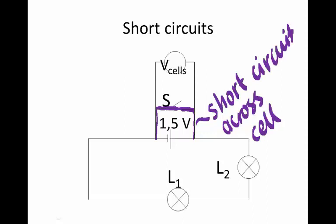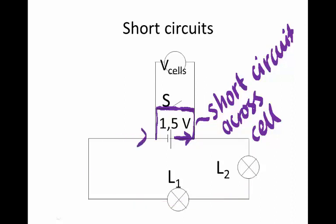And so when the charge must make its choice — must it go around there or should it go around the circuit? — none of the current will choose that difficult path around the circuit. All of it will go through this extremely easy path, this short circuit. And so your bulbs will not shine and your battery will get flat very quickly. So this is a short circuit across the cell.